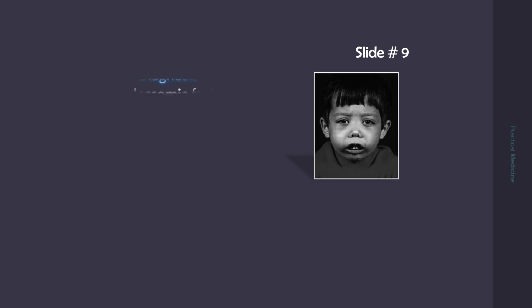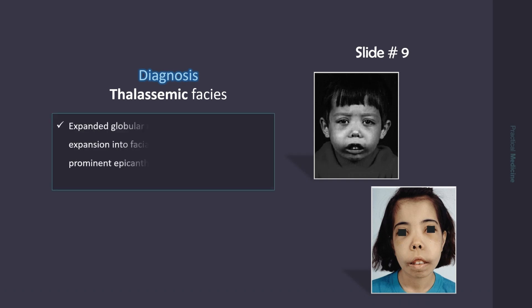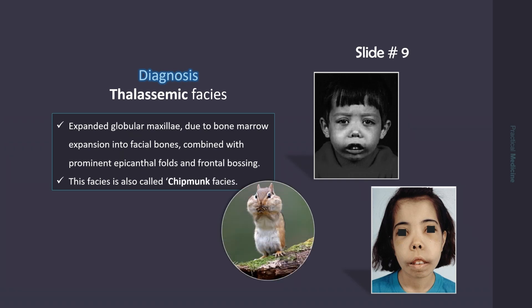What you see here is thalassemic facies. Notice expanded globular maxillae, due to bone marrow expansion into facial bones, combined with prominent epicanthal folds and frontal bossing. This appearance is also called chipmunk facies.